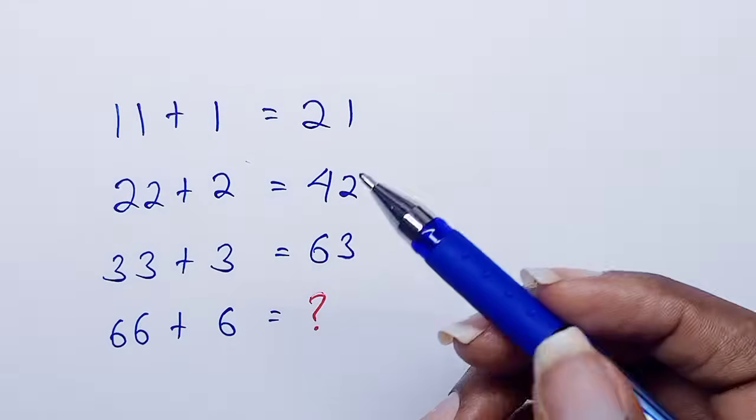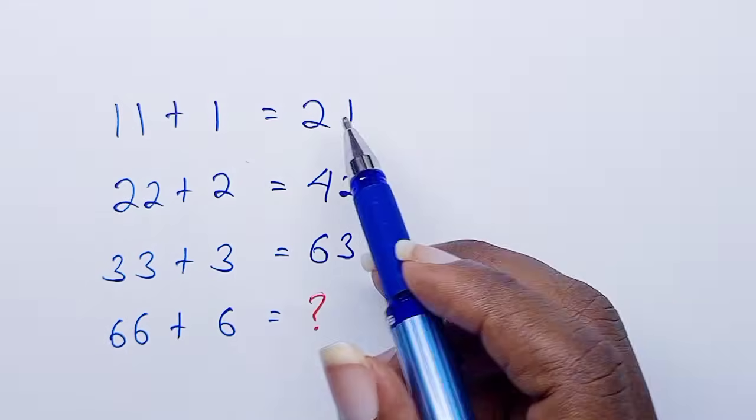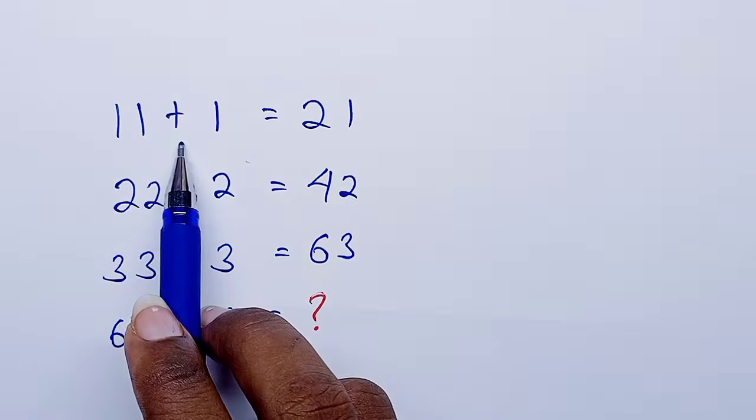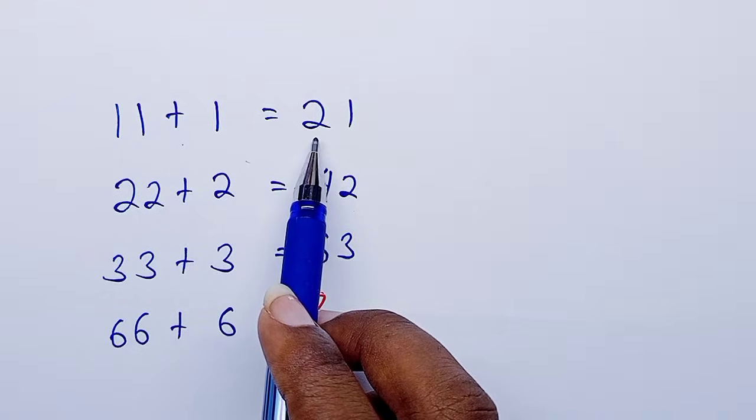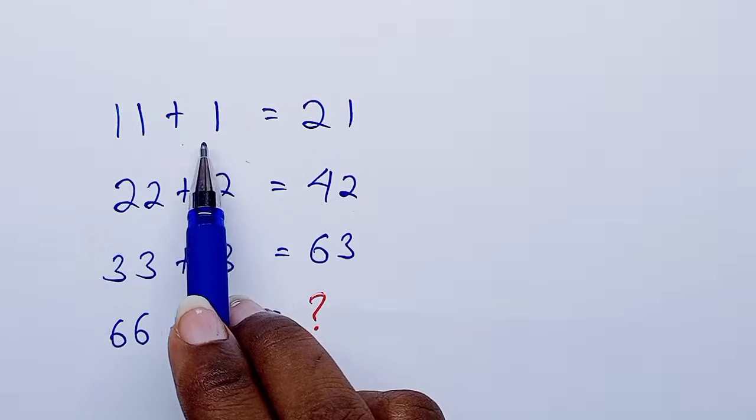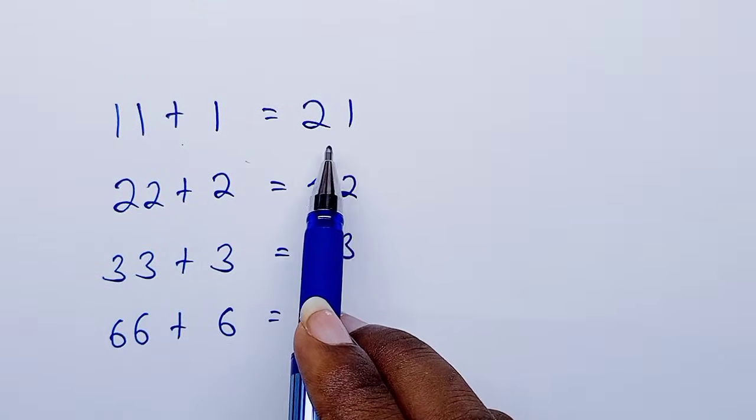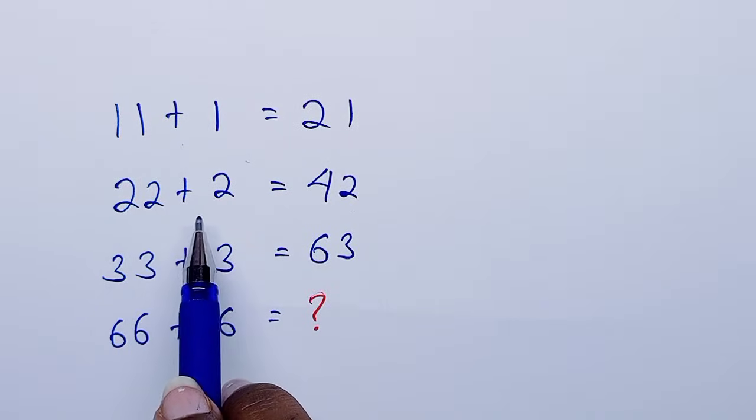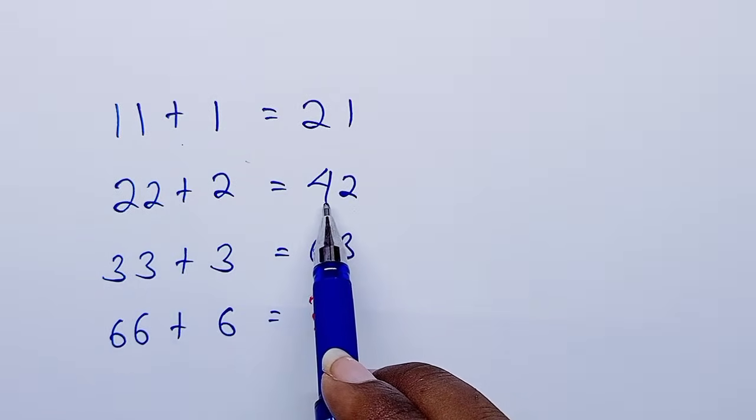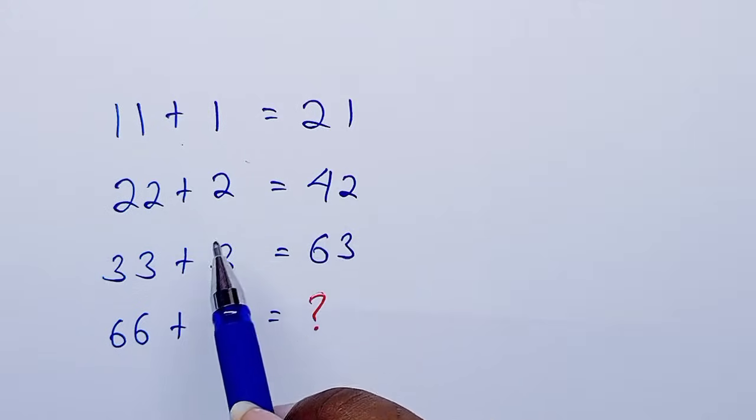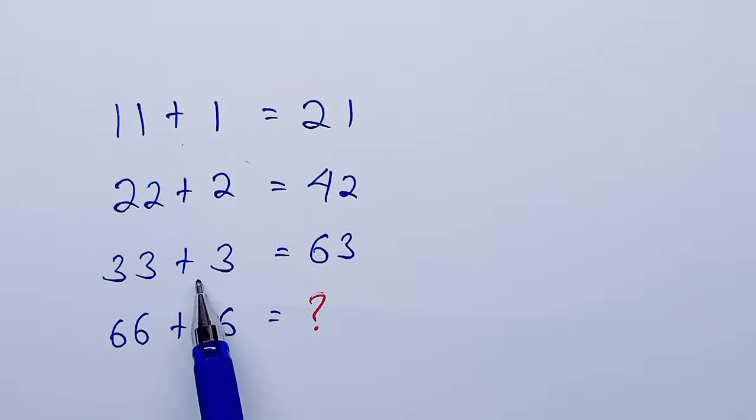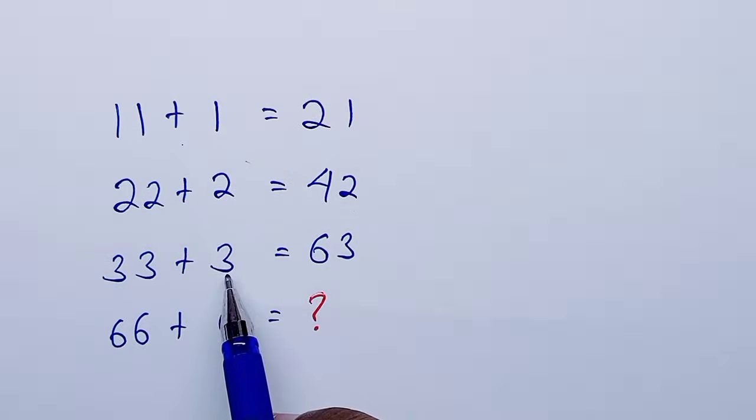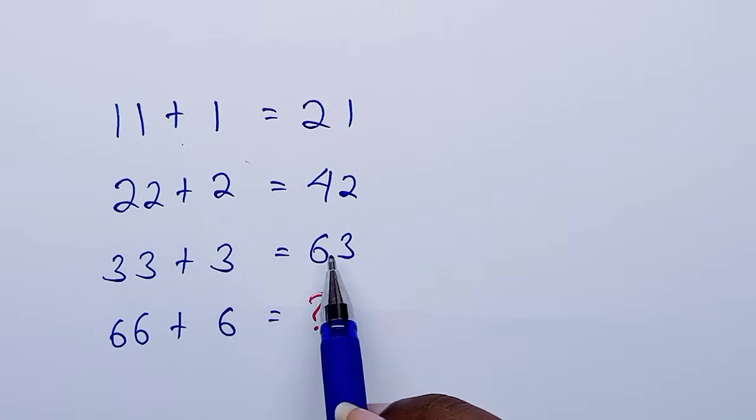So let's continue. Hope you've got your answer ready. So we have 11 plus 1 equals 21. We know that 11 plus 1 is actually 12, it's not 21. Then 22 plus 2 is actually 24, not 42. Then 33 plus 3 is 36.